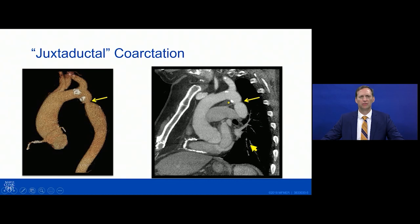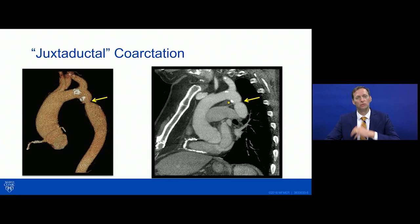This is a 3D reconstruction of that same CT angiogram. You'll notice calcification in the region just proximal and beyond the narrowing, and calcification in the coronary arteries. Early coronary artery disease and stiffening and calcification of the aorta are certainly things we worry about in patients who have had coarctation over their lifetime.